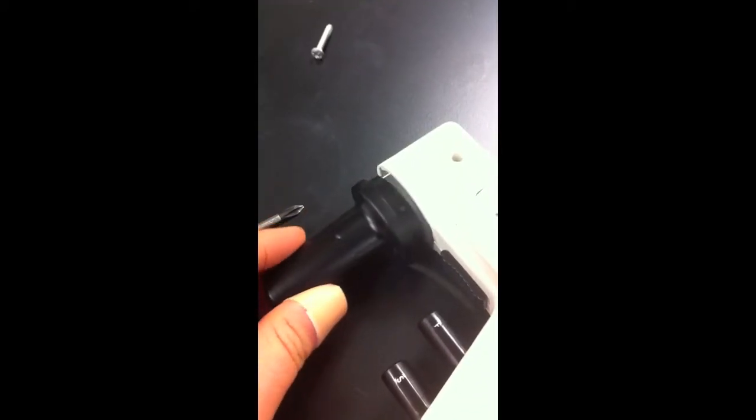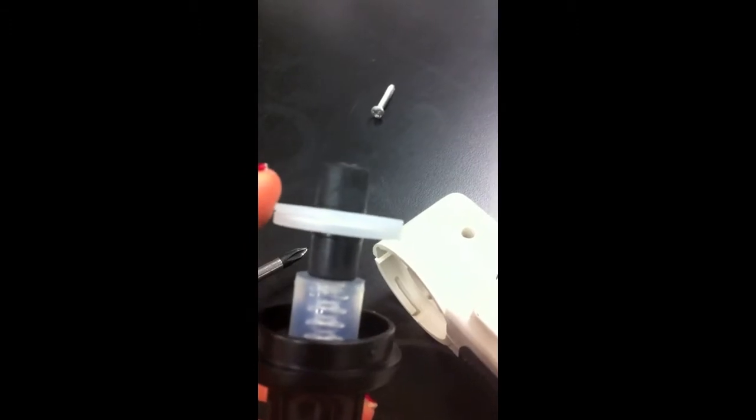So to remove the nose piece, there's a button right underneath, a black button. You just release that and then you can twist it right off and you can take the filter out.